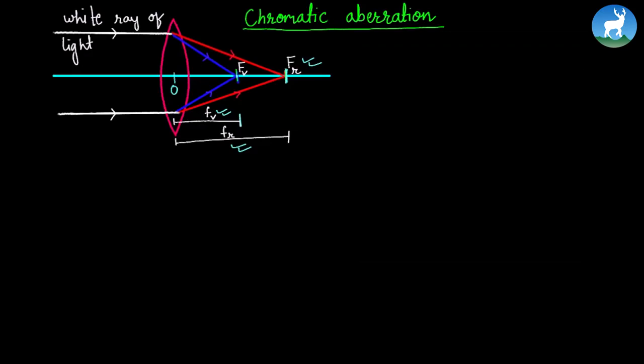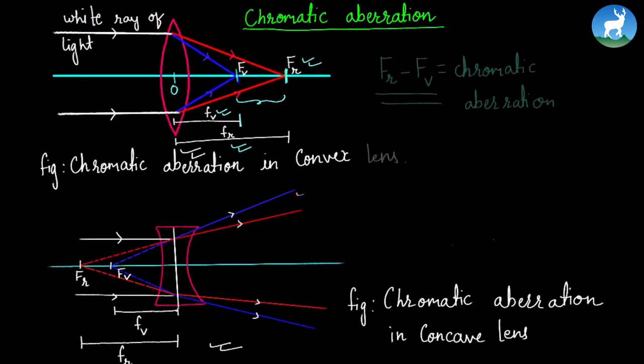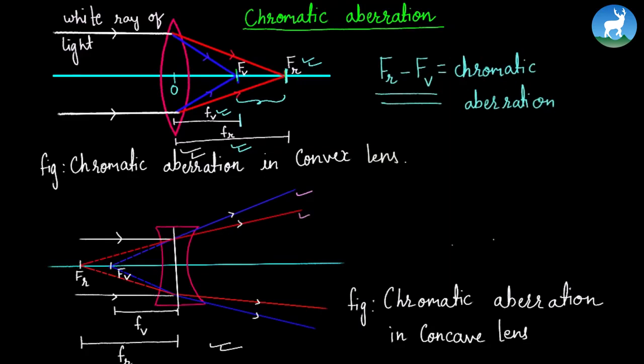The red color has a longer focal length. The chromatic aberration occurs because violet light has shorter wavelength than red light.